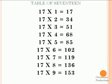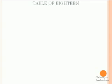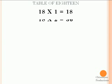17 9s are 153, 17 10s are 170. The table of 18. 18 1s are 18, 18 2s are 36.